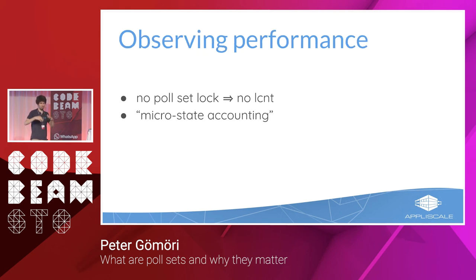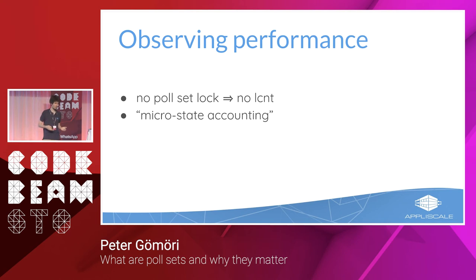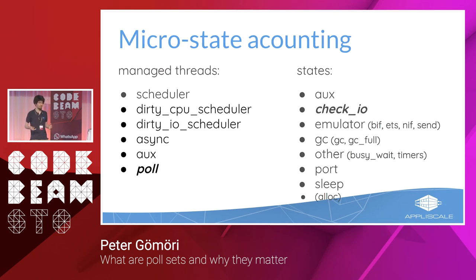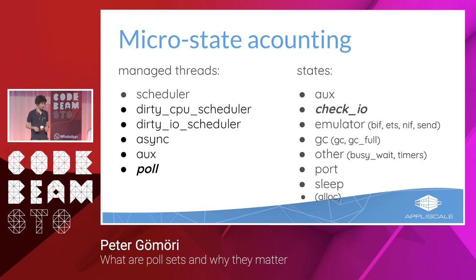Now let's see how our total application performed, and also how we can inspect the performance of this IO handling framework. The poll set lock is gone, so we can't use lock counting anymore. But there is microstate accounting — another tool, similar to and an improved version of checking scheduler utilization. The non-sleep time is split into several predefined states, one of them being check_io. It also works not only for schedulers but for other managed threads: dirty schedulers, the async thread pool, the aux thread, and most importantly for us, the poll thread.